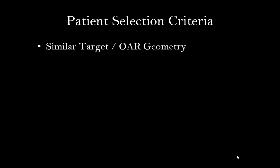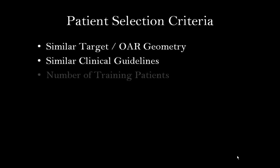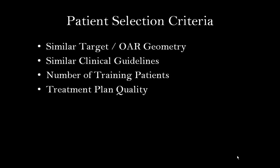The objective of this module is to describe criteria considered in the selection of patients for a rapid plan model. These criteria include similar target and organ at risk geometry, similar clinical guidelines, number of training patients, and treatment plan quality.